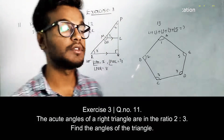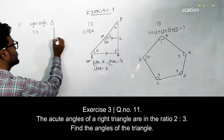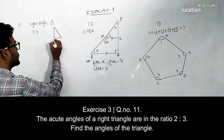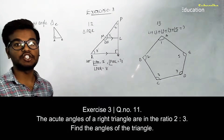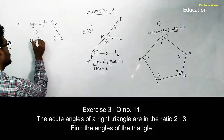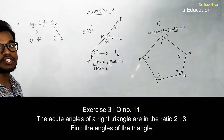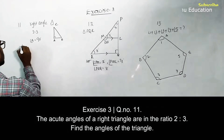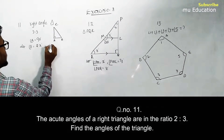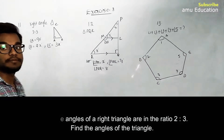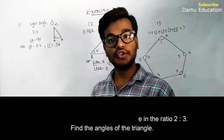Let's take right angle triangle ABC with the right angle at A, so angle A equals 90 degrees. For the two remaining angles, let angle B equal 2x degrees and angle C equal 3x degrees.